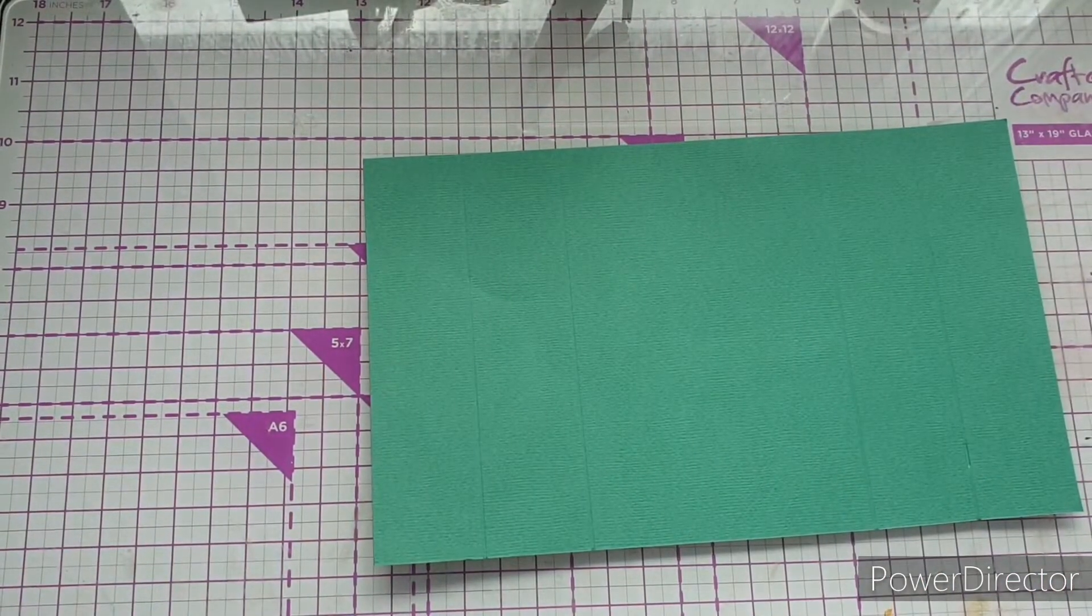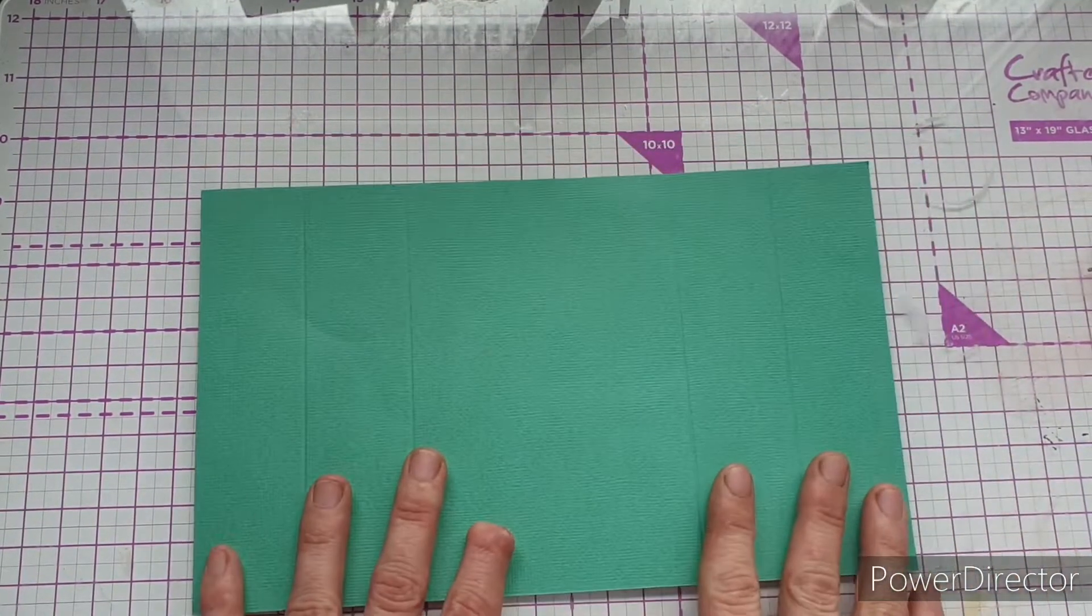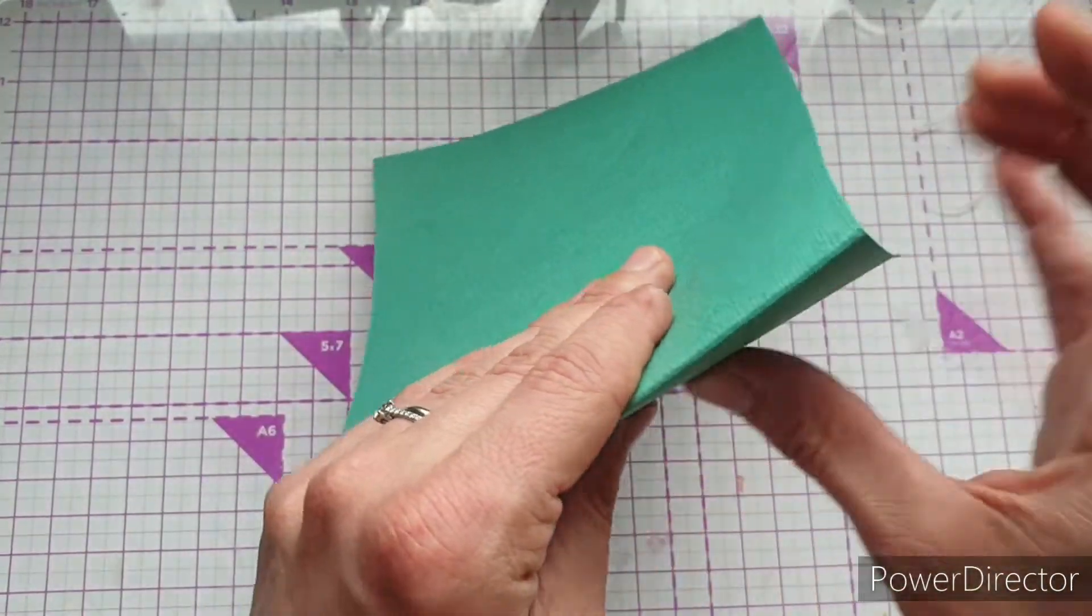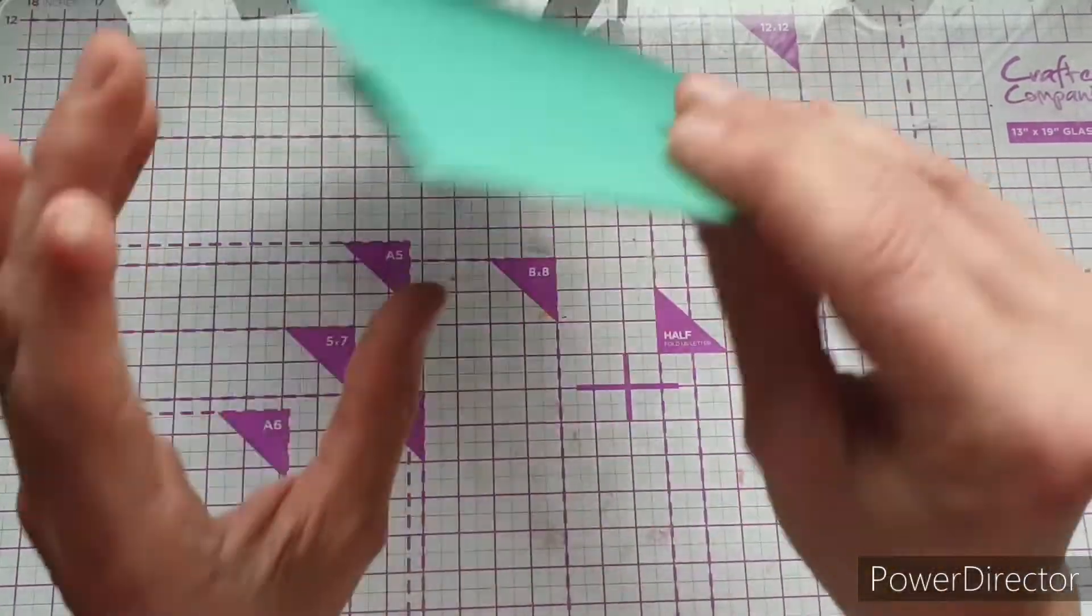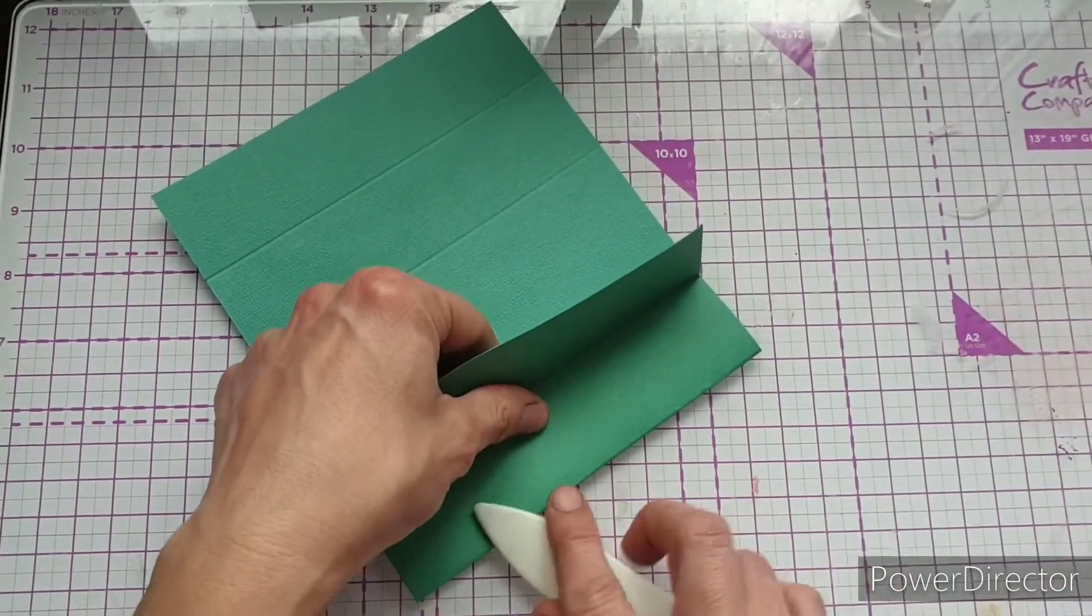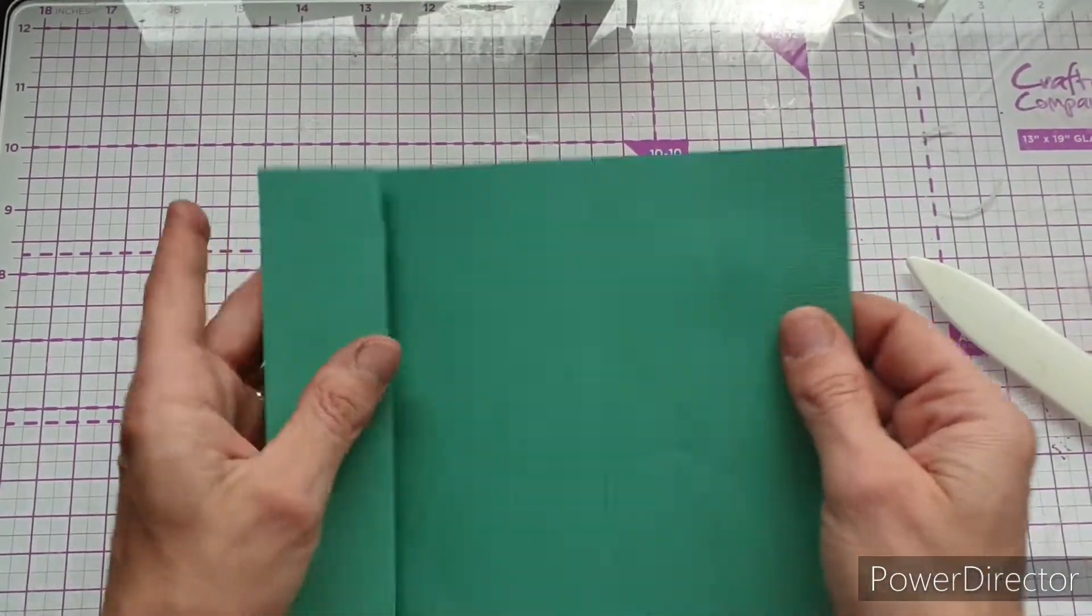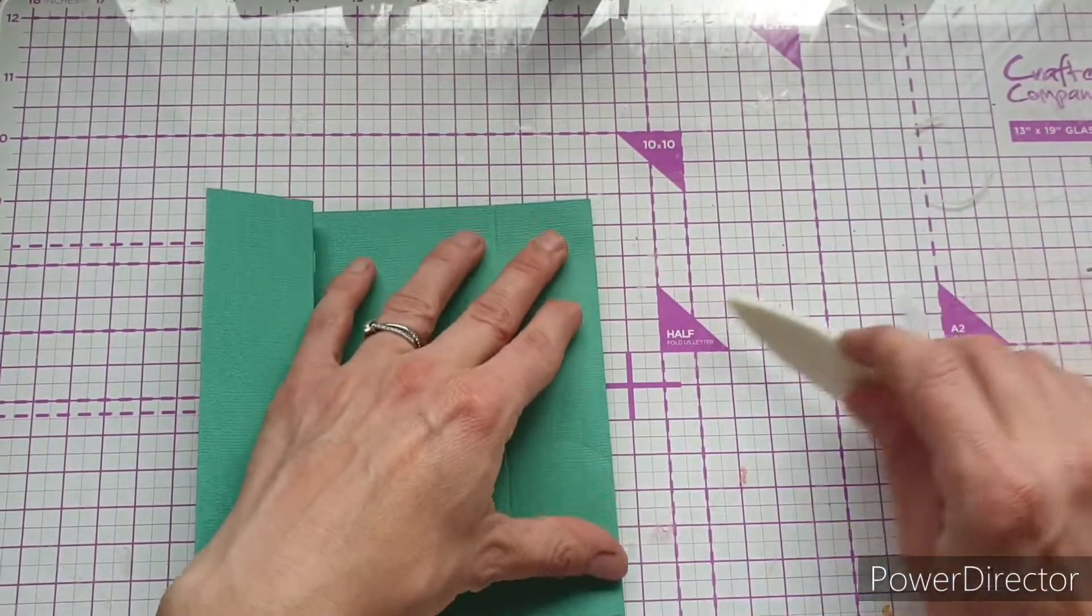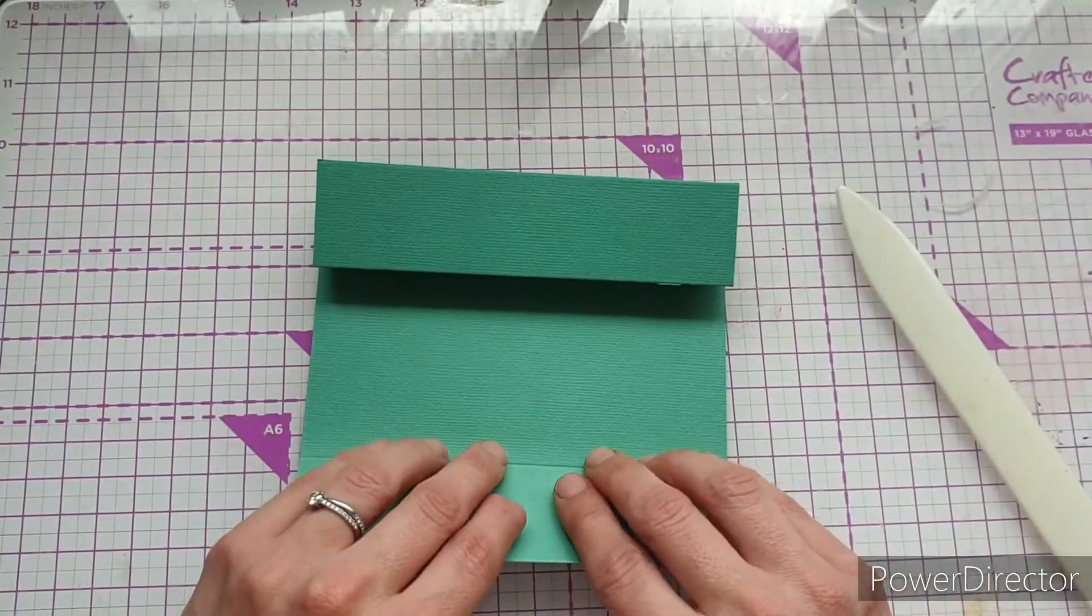So that's all the scoring we need to do. Now we can fold and burnish our score lines. We'll start with the right hand side. This very first piece you're going to fold into a mountain fold, then the next score line next to the big middle piece we're going to do as a valley. We're going to do the same with these ones, so make a mountain fold from the first one, and then the score line nearest the middle we're going to do as a valley fold.